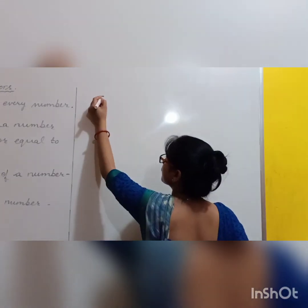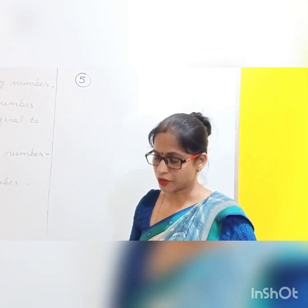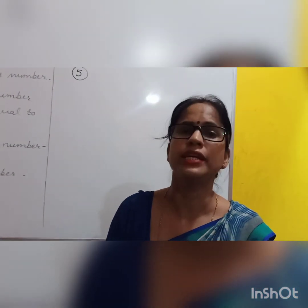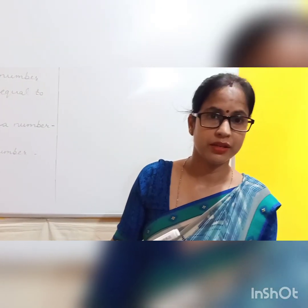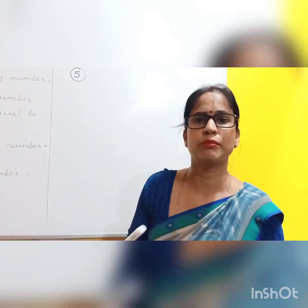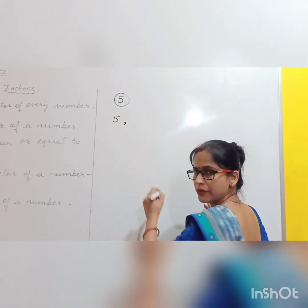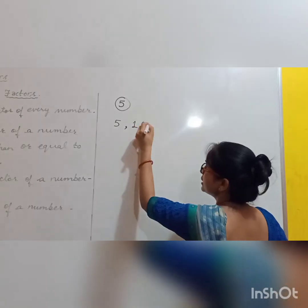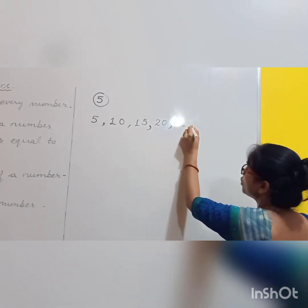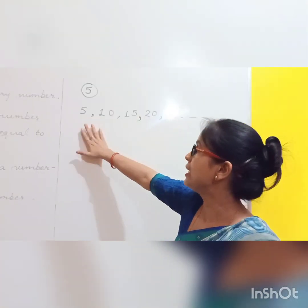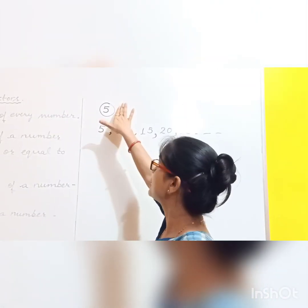Let's take an example: 5. We have to find the multiples of 5. To find the multiples of a given number is very easy — we simply have to read its table. So multiples of 5: 5 ones are 5, 5 twos are 10, 5 threes are 15, 5 fours are 20, and so on. So 5, 10, 15, 20, and so on are the multiples of 5.